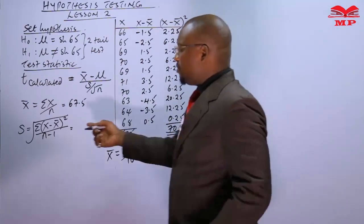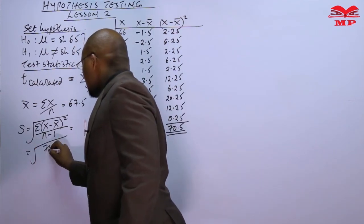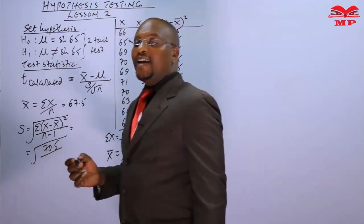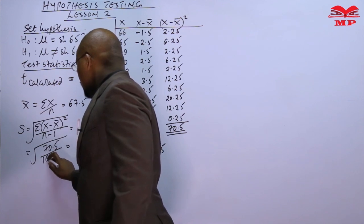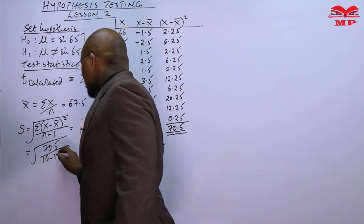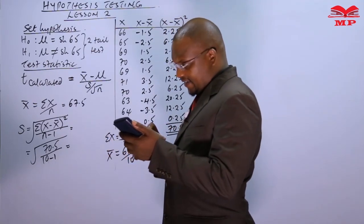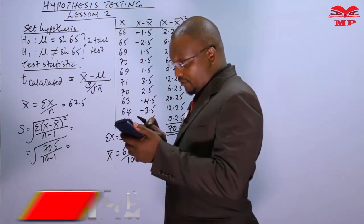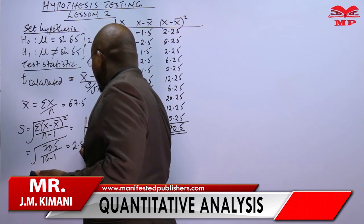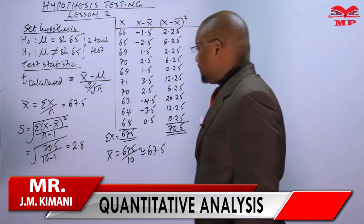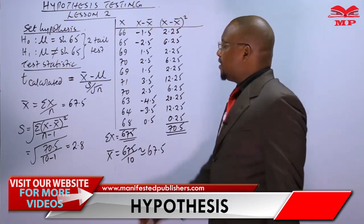We now substitute to get the standard deviation s. We have 70.5 divided by (n minus 1), which is 10 minus 1 equals 9, then take the square root. So the square root of 70.5 divided by 9 gives us s equals 2.8.